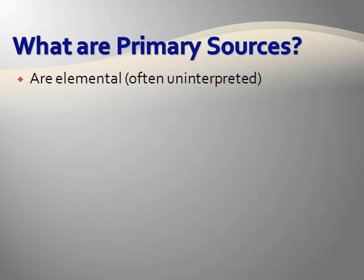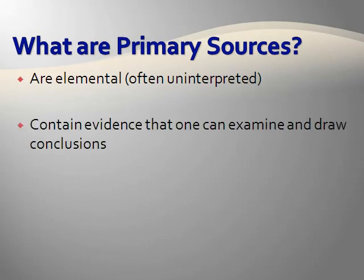Primary literature sources are defined as uninterpreted sources of information and can be a very important part of a literature search. Primary sources allow you to examine the actual evidence of studies and experiments firsthand without being affected by other opinions. Then you are able to draw comparisons between your assessments and the conclusions of others.